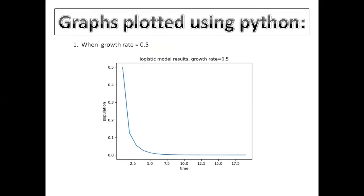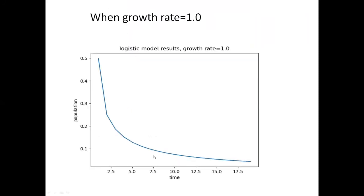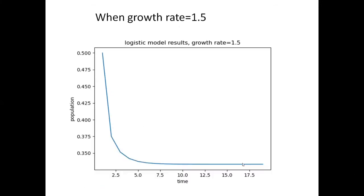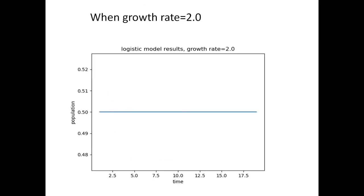Now with r between 0 and 1, population will eventually die independent of the initial population. With r between 1 and 2, the population will quickly approach an equilibrium value independent of the initial population. As you can see, it approaches an equilibrium value.